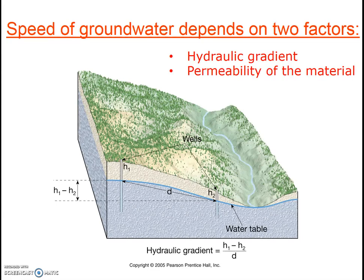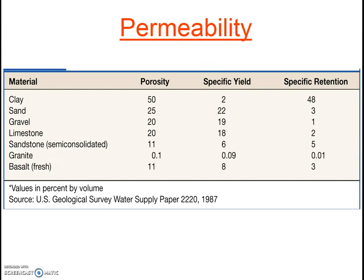Permeability refers to the ability of a substance to transmit fluid. Some subsurface materials, like sands and gravels, transmit water easily. Other substances, for example clay, have a low permeability. Imagine we have two tubes, one filled with gravel and one filled with clay, both open at the ends and oriented in an upright position with mesh screens to hold in the material. If we poured water on top of the gravel-filled tube, it would flow through very quickly and spill onto the floor. If we poured water on top of the clay, it would eventually soak in, but it might take days, weeks, or years to flow downward through the tube.